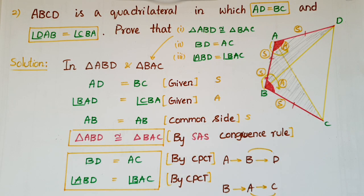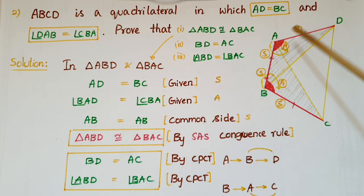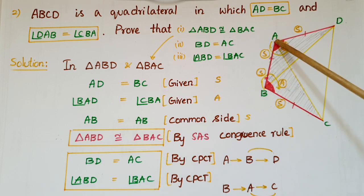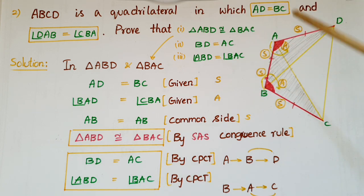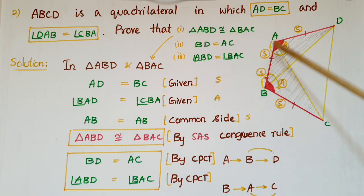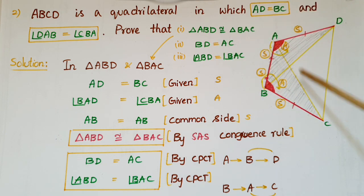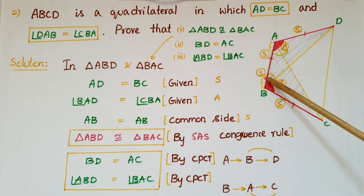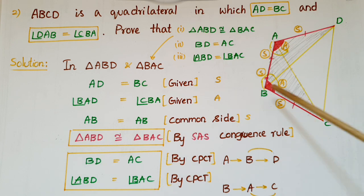This is the second problem. ABCD is a quadrilateral in which AD is equal to BC and angle BAD is equal to angle CBA. So these two angles are equal and these two sides are equal. We have to prove that triangle ABD is congruent to triangle BAC, and that BD is equal to AC, and angle ABD is equal to angle BAC.